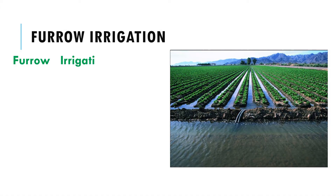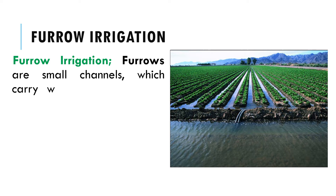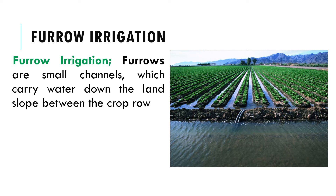Furrow irrigation: Furrows are small channels which carry water down the land slope between the crop rows. Water infiltrates into the soil as it moves along the slope. The crop is usually grown on the ridges between the furrows. This method is suitable for all row crops and for crops that cannot stand in water for long periods.